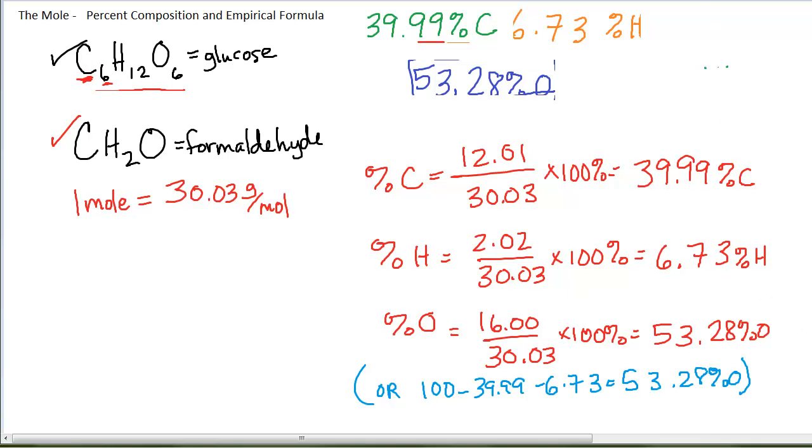As you see, we came up with the percentage of carbon, hydrogen, and oxygen. These percentages are identical to the percentages that we got for our glucose molecule. Do you see why? Can you see what the relationship is between these two molecular formulas?